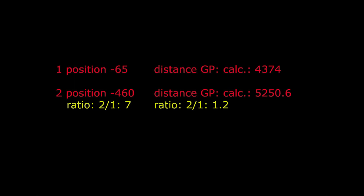But as I said in his diagram, the distance of the second GP to the first is 460 divided by 65 equals 7 times as far. So at the very first step, he is a factor of almost 6 wrong.